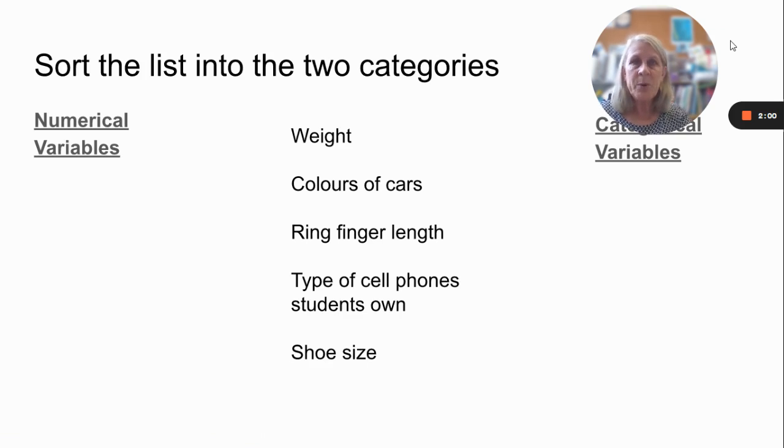So here's a couple of examples. We've got weight, colour of cars, ring finger length, type of cell phone students own, and shoe size. So weight is obviously measured, colour of cars, well they're distinct data, so discrete, therefore they're blue and red and yellow, and so we can put them in categorical. Ring finger length, that's another measured one, type of cell phone, another categorical.